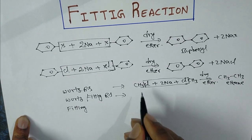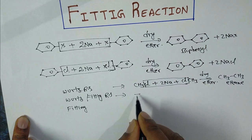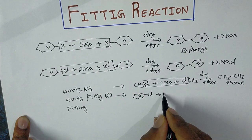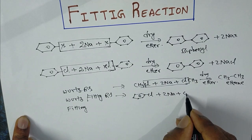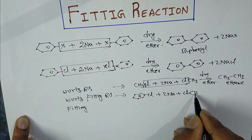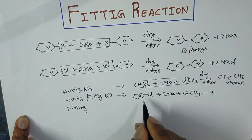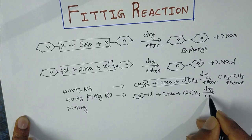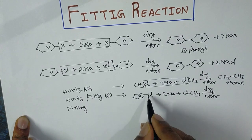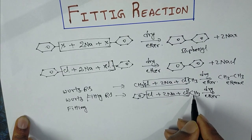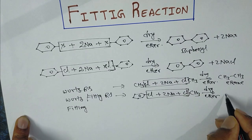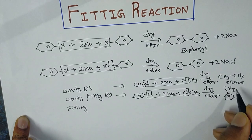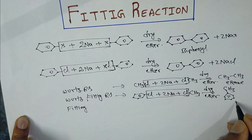In the Wurtz-Fittig reaction, one is aryl and one is alkyl. Take chlorobenzene reacting with methyl chloride and sodium metal in the presence of dry ether. Here also 2NaCl is removed, so methyl is substituted into benzene and we get toluene, an aromatic hydrocarbon.